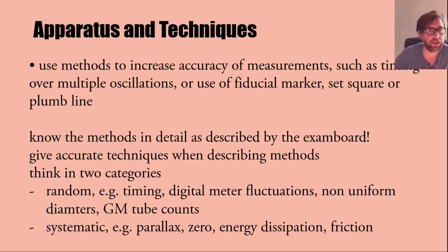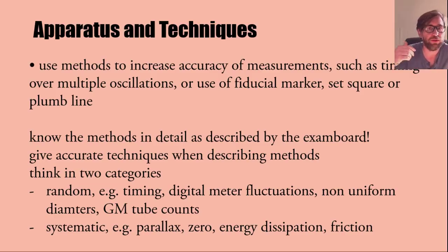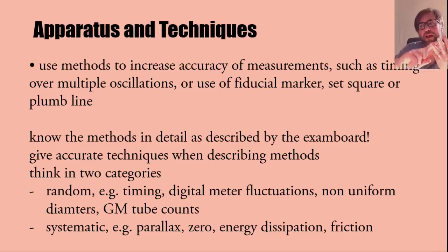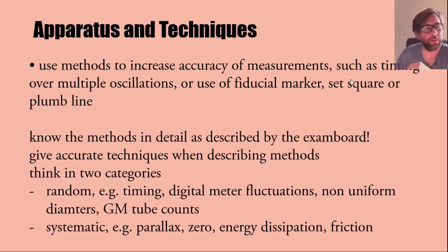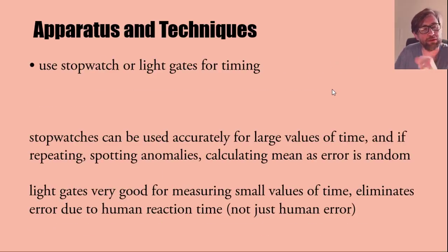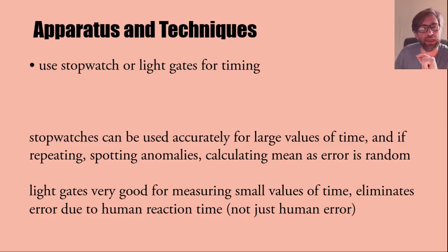Make sure you state what you're measuring with and how to do it accurately — those parts of answers often go missing. Always think about those errors and uncertainties in two categories: random and systematic. When would you use a stopwatch versus light gates? Stopwatches can be used accurately for large values of time, especially if you repeat, spot anomalies, and calculate the mean. That's appropriate when an error is random.